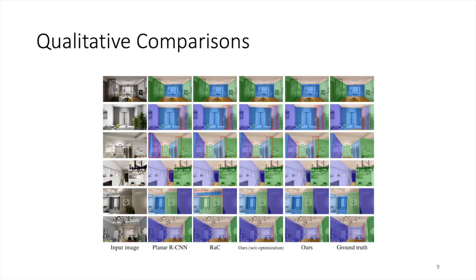Here we show some qualitative results on the 2D layout segmentation. Planar RCNN does not reason how planes intersect with each other. As a result, two adjacent planes may inter-penetrate each other or do not touch each other. Render and Compare may not be robust due to hand-designed heuristics.